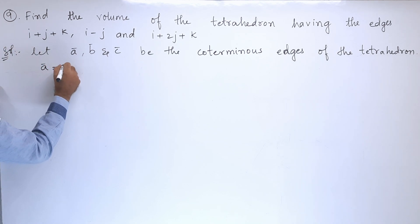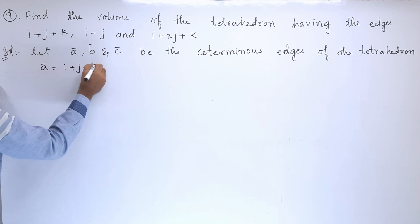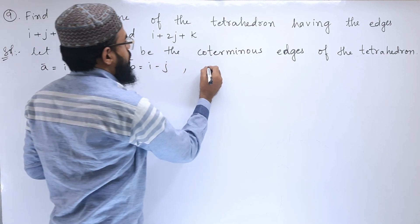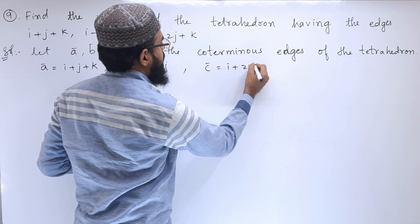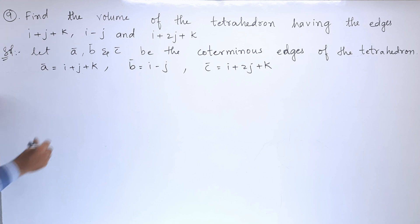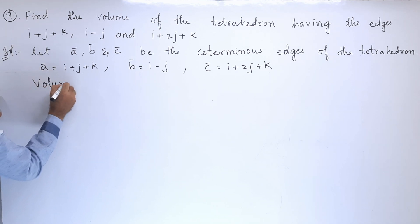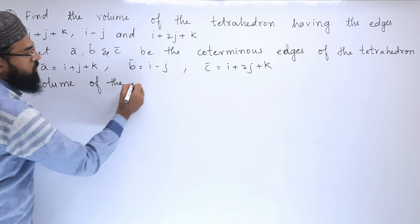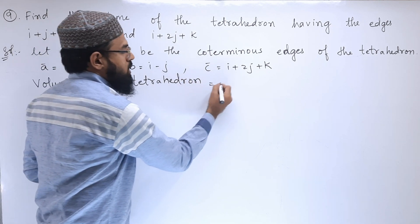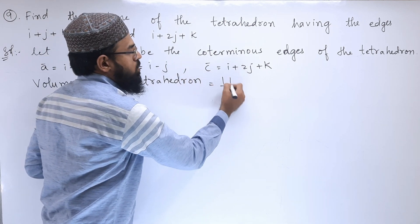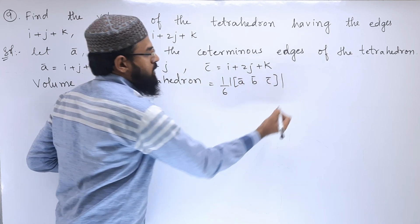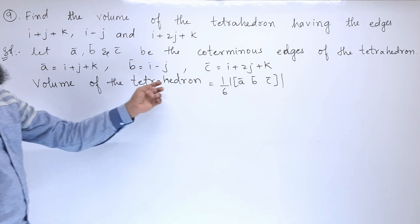Therefore, vector A equals i plus j plus k, vector B equals i minus j, and vector C equals i plus 2j plus k. We need to find the volume. The formula for the volume of a tetrahedron is 1/6 times the modulus of the scalar triple product [A, B, C].